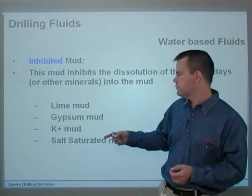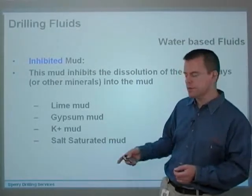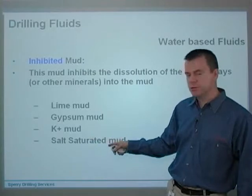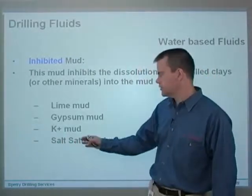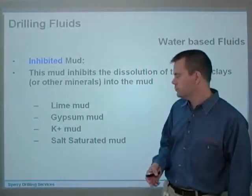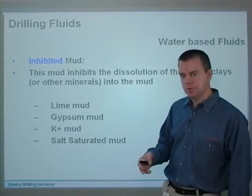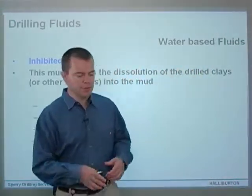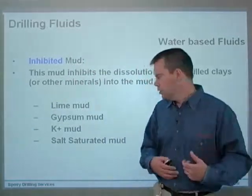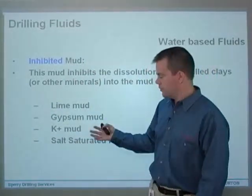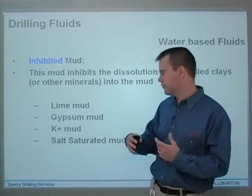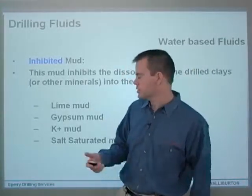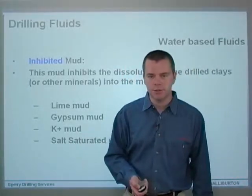Some inhibited muds include lime muds, gypsum mud, potassium mud, and salt-saturated mud. Salt-saturated is slightly different: if you're drilling through salt with fresh water, the salt would dissolve and you'd end up with a huge cavern. So you add a whole load of salt to your mud at surface before drilling — it can no longer hold any more salt, therefore it doesn't dissolve the salt as you drill through it. That's a form of inhibition, similar to adding potassium to stop clay from being dissolved.